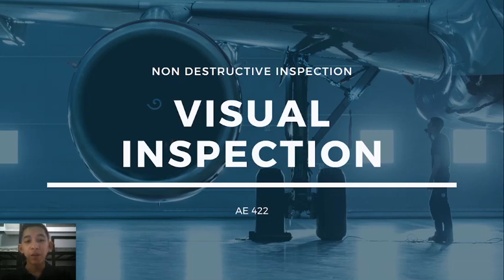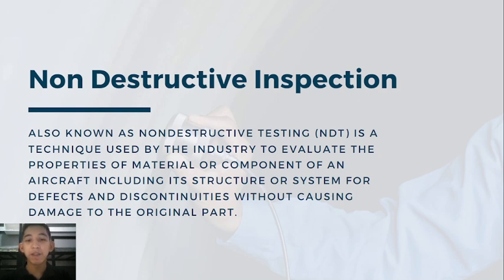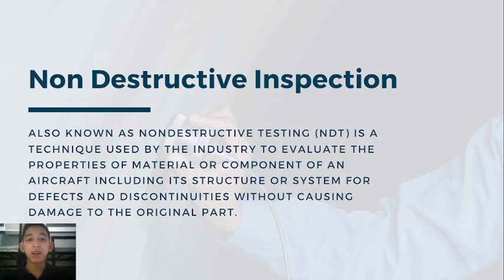Before we go into visual inspection, we need to know first what is non-destructive inspection. Non-destructive inspection, also known as non-destructive testing (NDT), is a technique used by the industry to evaluate the properties of a material or component of an aircraft — including its structure or system — for defects and discontinuities without causing damage to the original part. By its name, it means that it is a test or inspection on a material that is not destructive. There are many types of NDTs, but for this video, we'll be talking about visual inspection.